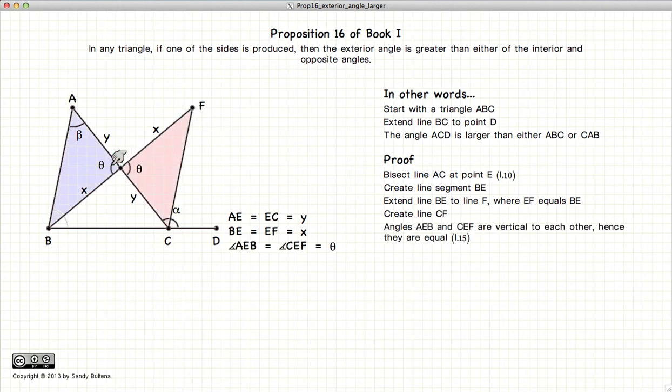And because these two angles are vertices of each other, they are both equal. So now we have two triangles with side, angle, side. And we know from Proposition 14 that if we have two triangles with side-angle-side, they are equivalent in all respects, including the angles.